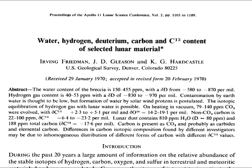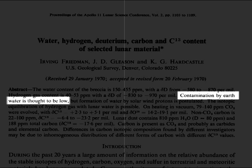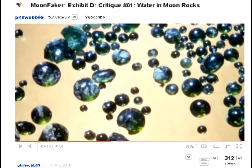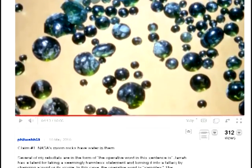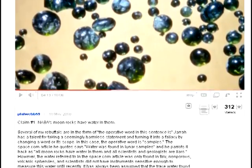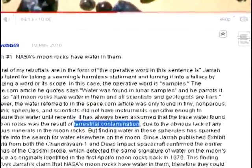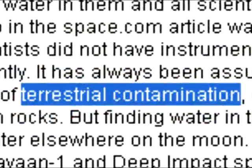Friedman's team also doubted that the water they found could have been from contamination. But even though their 1970 paper explicitly states that contamination by earth water is thought to be low, throughout his video Webb peddles the same old excuse that NASA and propagandists have used whenever pressed on this substantially high amount of water: 'Oh, it's just contamination from the water here on the earth.'